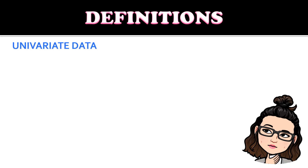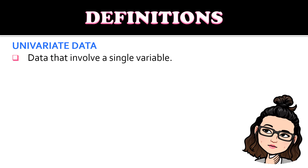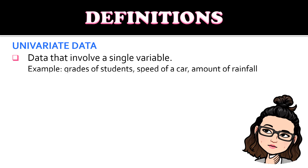We have univariate data. What is univariate data? These are data that involves a single variable. Examples would be grades of students, speed of a car, or amount of rainfall.